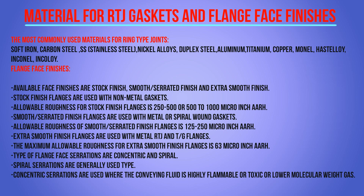Available face finishes are stock finish, smooth serrated finish, and extra smooth finish. Stock finish flanges are used with non-metal gaskets; allowable roughness is 250–500 or 500–1000 micro inch AARH. Smooth serrated finish flanges are used with metal and spiral wound gaskets; allowable roughness is 125–250 micro inch. Extra smooth finish flanges are used with metal RTJ and tongue-and-groove flanges; the maximum allowable roughness is 63 micro inches AARH. Extra smooth finishes are used where the conveying fluid is highly flammable, toxic, or of lower molecular weight like gas.